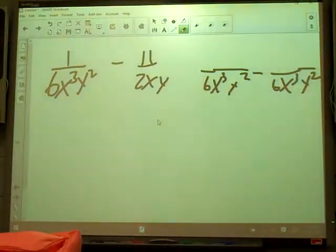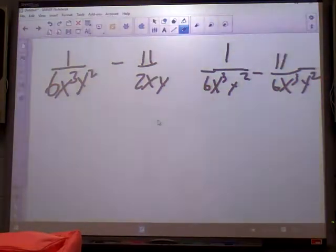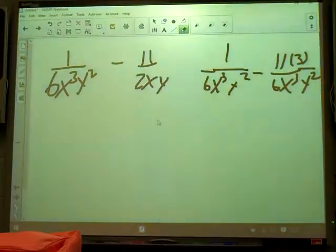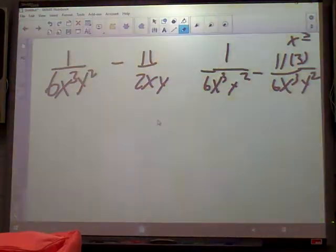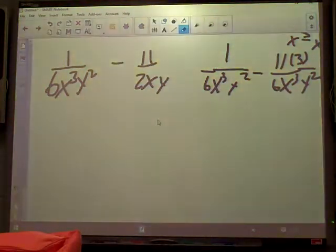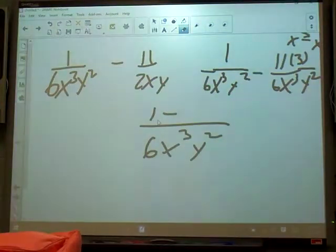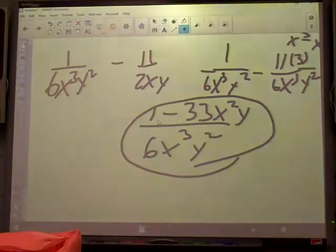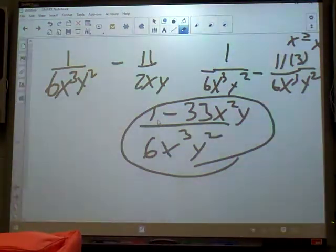Alright. So the 1, it didn't change. It stayed 6x cubed y squared. So we don't change the 1 on top. The 11, we've got to do some work with it because it was a 2 and we changed it to a 6. That means we multiplied it by 3. It was an x and we changed it to an x cubed. That means we multiplied it by an x squared. And y, we changed it to y squared. So we multiplied it by y. So we got 6x cubed y squared. 1 minus 11 times 3 times x squared times y. That's like trying to read hieroglyphics or something, isn't it? D as in dirty.